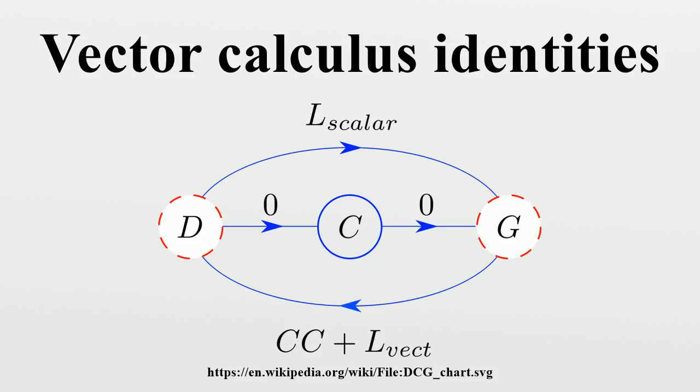Properties: Distributive properties and product rule. For the gradient, the gradient of the product of two scalar fields φ and ψ follows the same form as the product rule in single variable calculus. Product of a scalar and a vector, quotient rule, and chain rule.